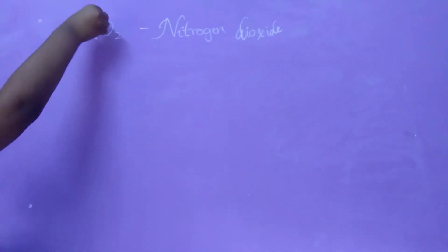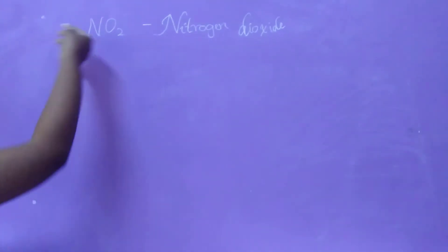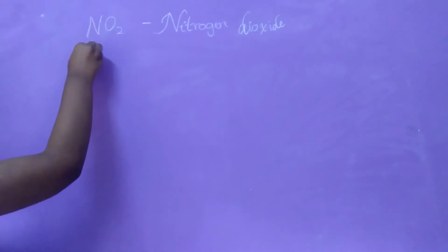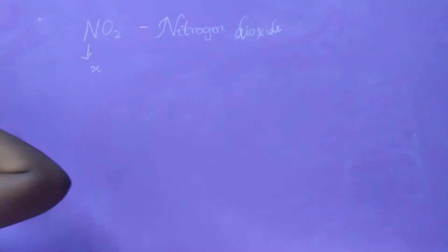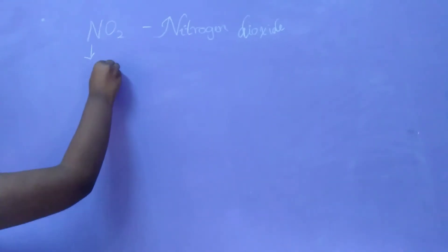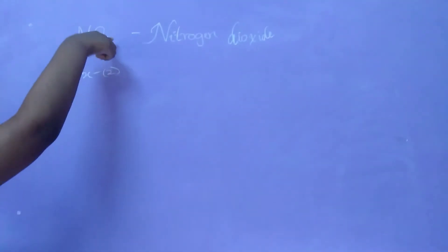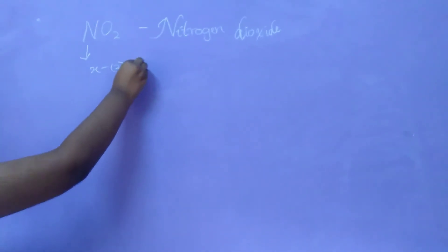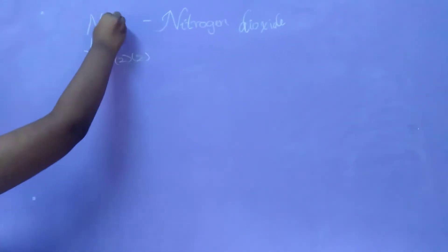To find the nitrogen oxidation number, we'll take it as X. Oxygen generally has an oxidation number of minus 2, and since we have O2, we multiply by 2 here. It should equal 0 as this molecule has no charge.